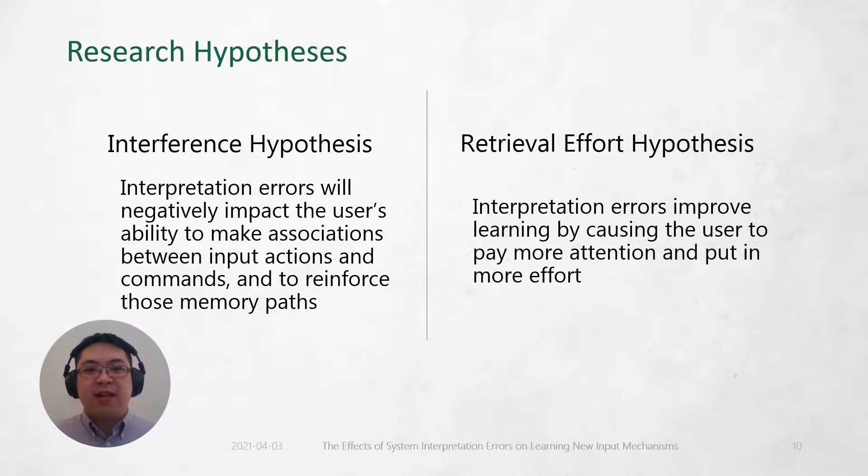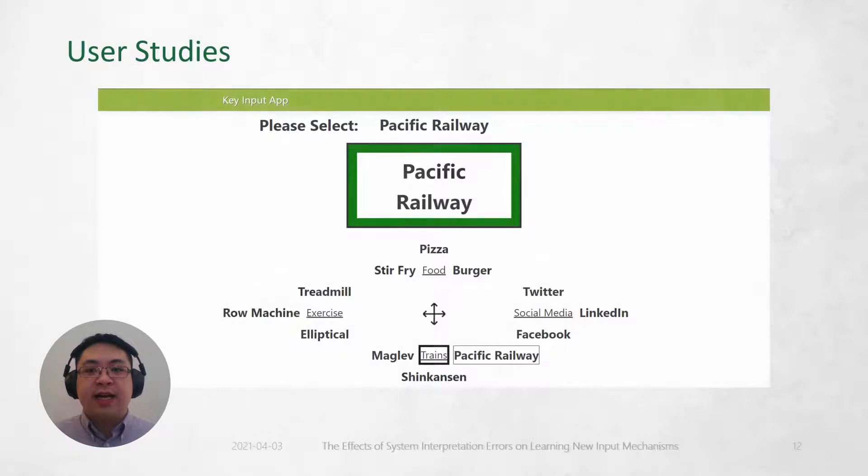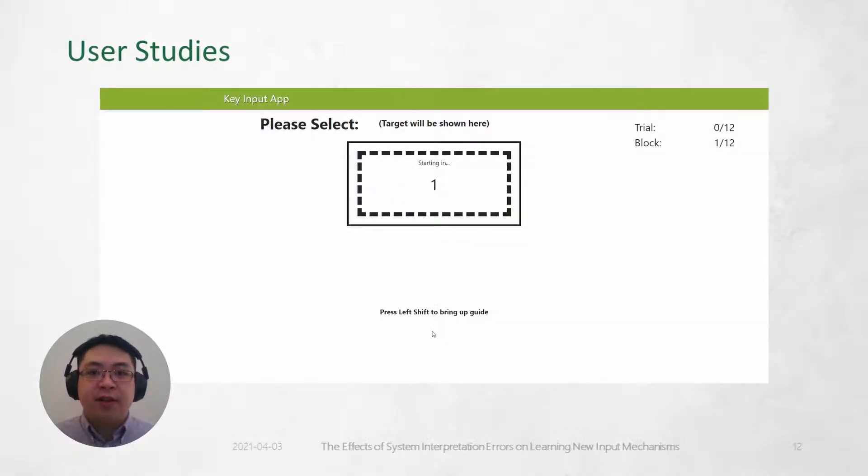To test these hypotheses, we conducted two user studies where participants were tasked with selecting items from a menu using keyboard arrow keys. We created a system that could easily differentiate between novice and expert use so that we could observe their learning process.